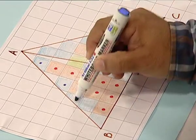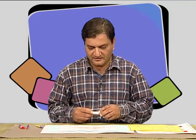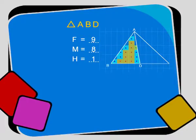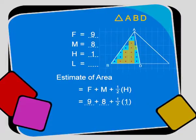Next we count the more than half filled squares, denoted by a blue dot — 1, 2, 3, 4, 5, 6, 7, 8. These are 8 in number. Now we count the squares which are exactly half filled, shown by a green dot. There is one such square. The estimate of the area of triangle ABD is: fully filled (F) + more than half filled (M) + half of the half filled squares. Substituting these values, we get 9 + 8 + half of 1, which comes out to be 17 and a half square units.